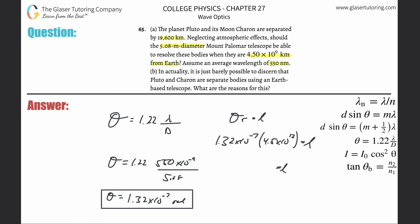So this is now the minimum distance. Let's see what it works out to be. Take the 1.32 times 10 to the minus 7, multiply it by 4.5 times 10 to the 12th. And here we get a value of the minimum distance now is going to be 594,000 meters. Now this is the minimum distance.